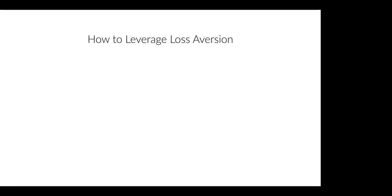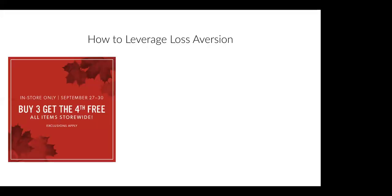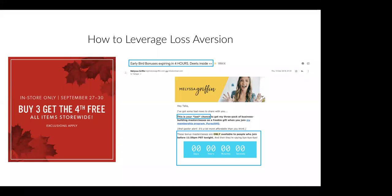The most common way of using loss aversion is by letting people know that something is running out — a sale is about to end or there are a limited number of products available. You'll see these tactics in emails, sales pages, pop-ups, and pricing pages. Melissa Griffin — a Pinterest influencer who teaches people how to use Pinterest to grow their business — uses loss aversion in her email to sell her course. It says 'early bird bonuses expiring in four hours, details inside,' and inside it says 'this is your last chance' with a countdown timer.